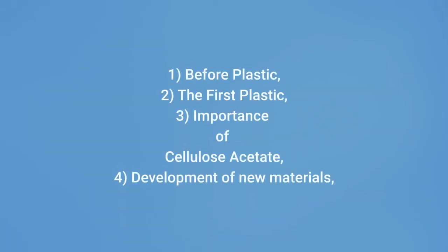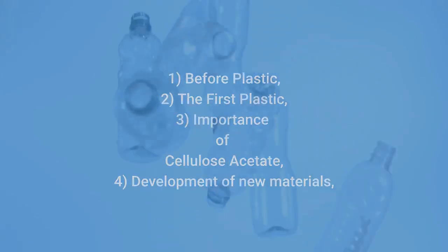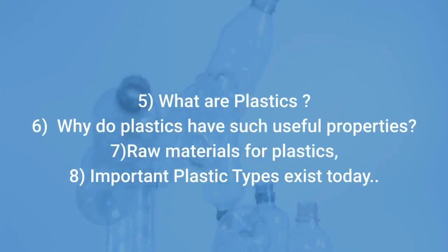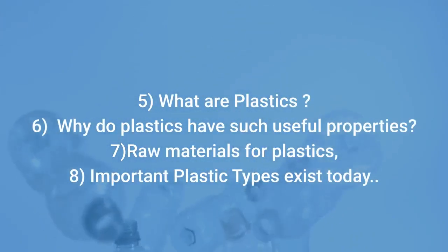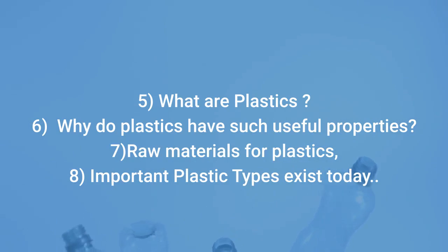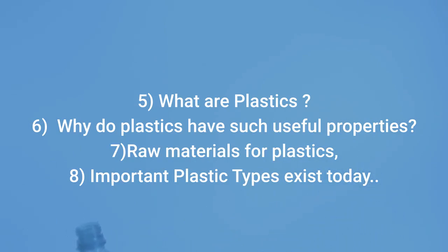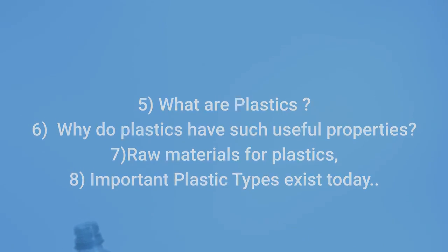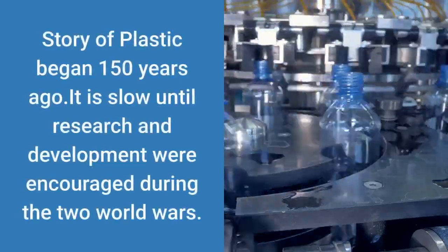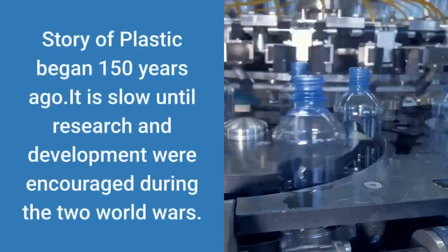1. Before plastic. 2. The first plastic. 3. Importance of cellulose acetate. 4. Development of new materials. 5. What are plastics? 6. Why do plastics have such useful properties? 7. Raw materials for plastics. 8. Important plastic types that exist today.